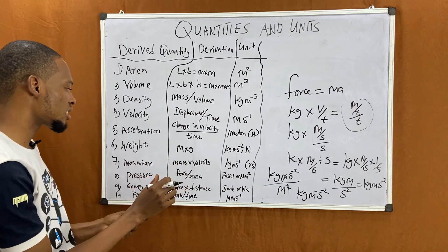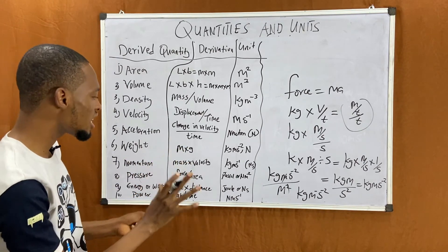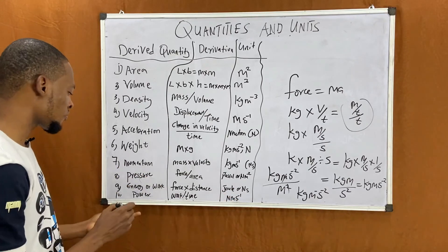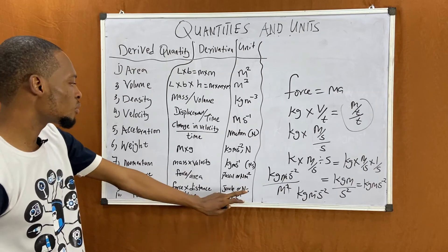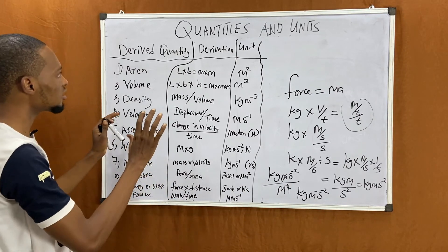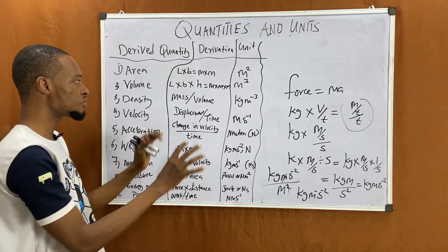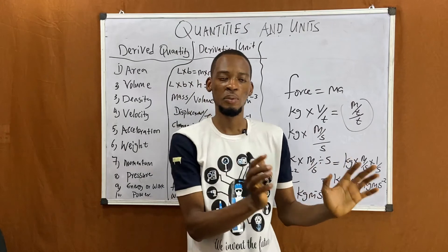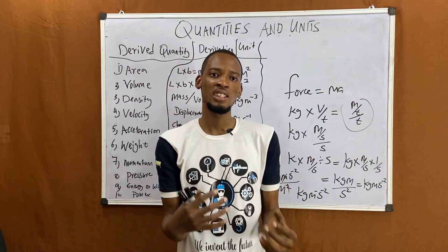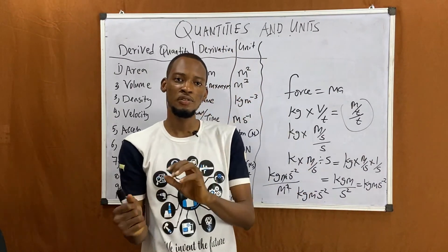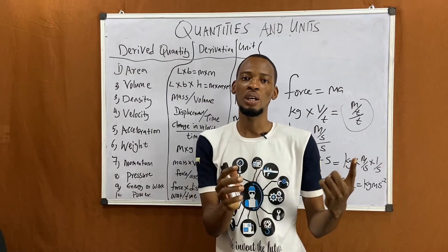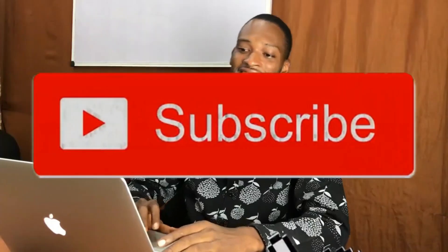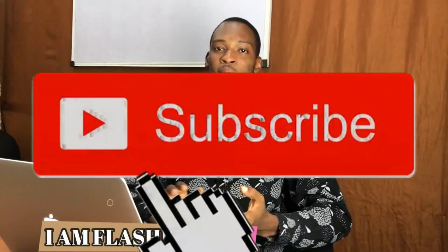Energy is force times distance, so multiplying force (kg·m/s²) by distance (m) gives kilogram meter squared per second squared (kg·m²/s²), which is the joule or newton-second. Power is work over time, so dividing work by time gives you power. That's how you derive quantities from fundamental quantities. In summary, we have two types of quantities in physics: fundamental quantities, which are independent, and derived quantities, which come from fundamental quantities and units. Check out my next video where I'll explain dimensions and how to check whether an equation is correct.